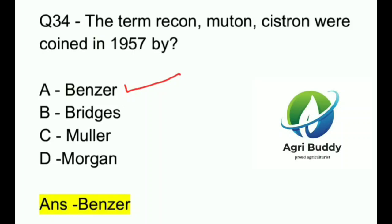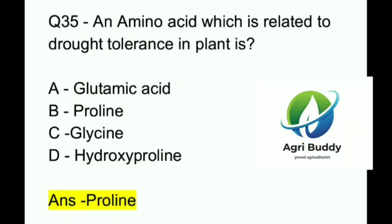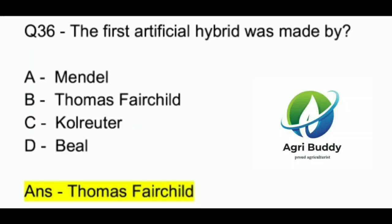Question 35. An amino acid which is related to drought tolerance in plants is? A. Glutamic acid. B. Proline. C. Glycine. D. Hydroxyproline. And the answer is Proline.